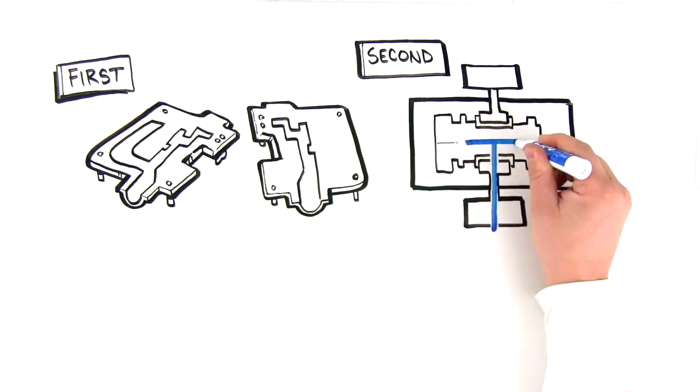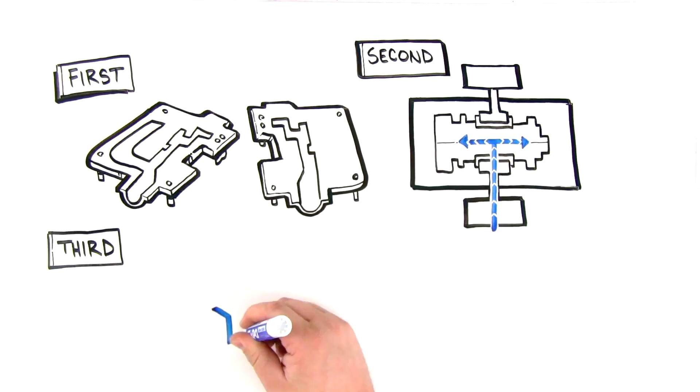Then the molten alloy is injected into the cavity. Once solidified, the assembly of components is a strong, permanent mechanical assembly that can withstand high loads.